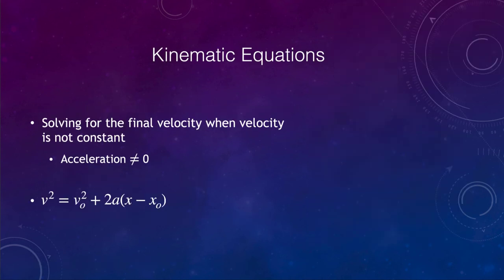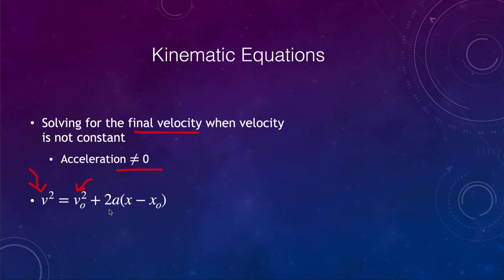In our next kinematic equation, we solve for the final velocity when the acceleration is non-zero. The square of the final velocity equals the square of the initial velocity plus two times the acceleration times the displacement — that is, how far the object has moved. Let's do an example with this equation.